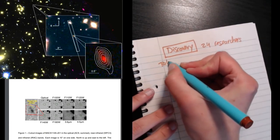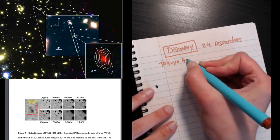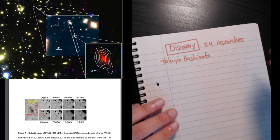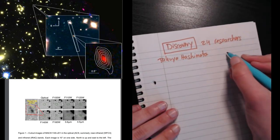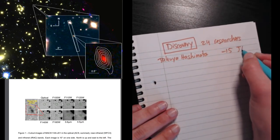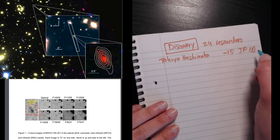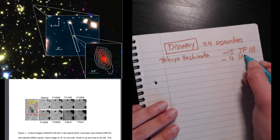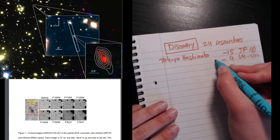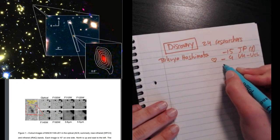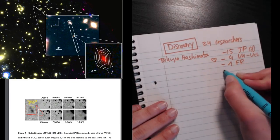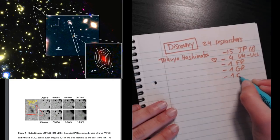The leader is called Takuya Hashimoto. And actually, most of the team is Japanese. So out of these 24 researchers, 15 are from Japan, from a total of eight different universities, four of them are from the UK, in UCL. And one researcher is from France, one from Germany, one from Chile, and one from the US.